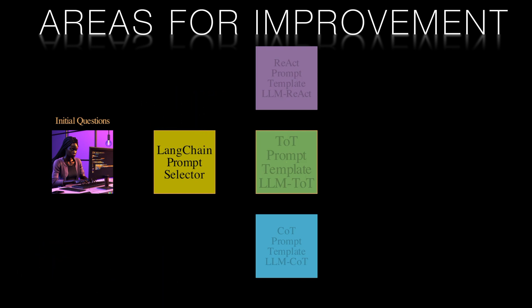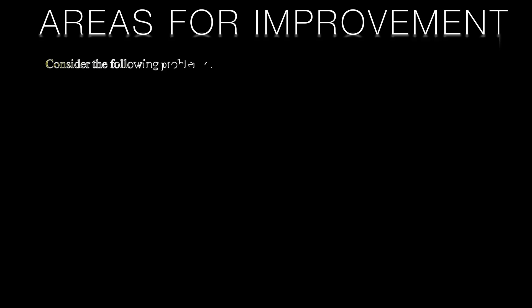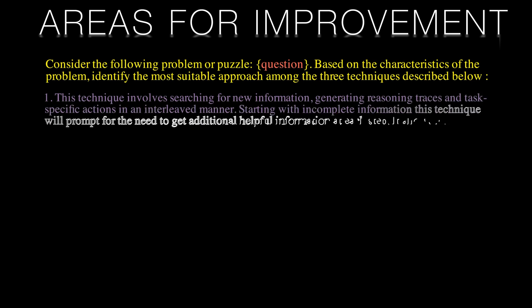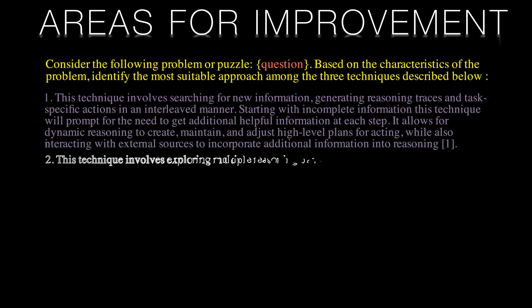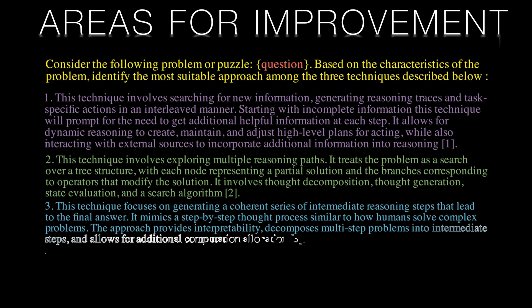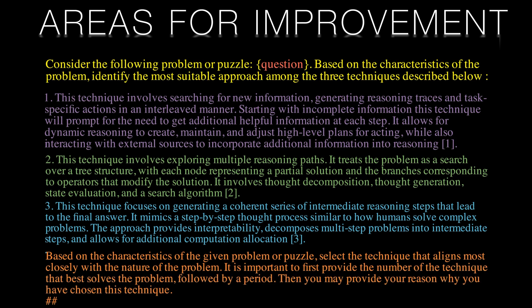Likewise, one could see different architectures — a hierarchy of different LLMs making the decision like a decision tree, or a set of peer LLMs that could vote for the most appropriate prompting template to use. Of course, the simplest thing here is to improve the decision prompt that I've come up with. I'm convinced others can use this as a baseline and refine it to give far superior results, and I look forward to seeing improvements appearing in the comments.